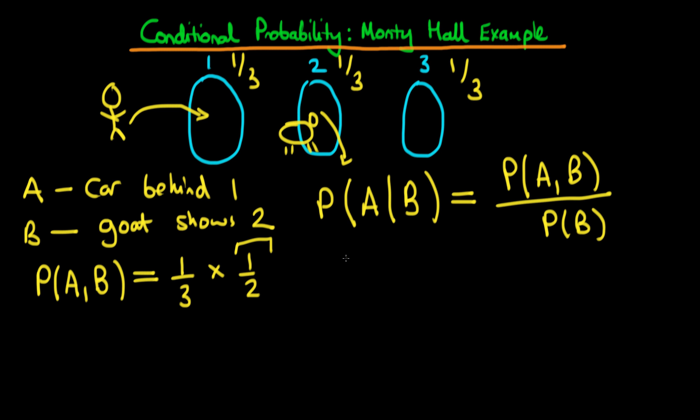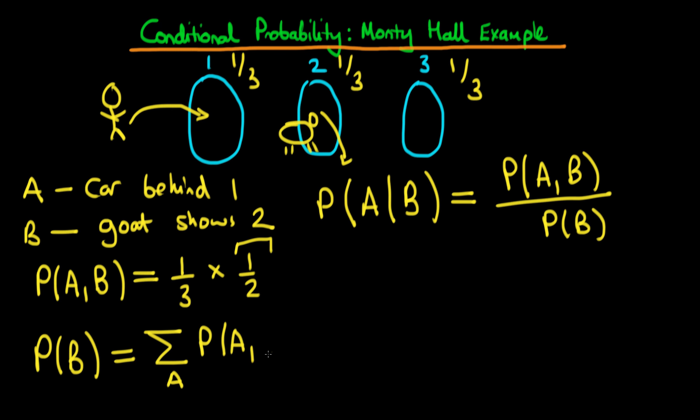For the denominator, we need the marginal probability of event B occurring. Using the rule for marginal probability, we sum over all possible values of the first random variable — that is, P(A and B) plus P(not A and B).